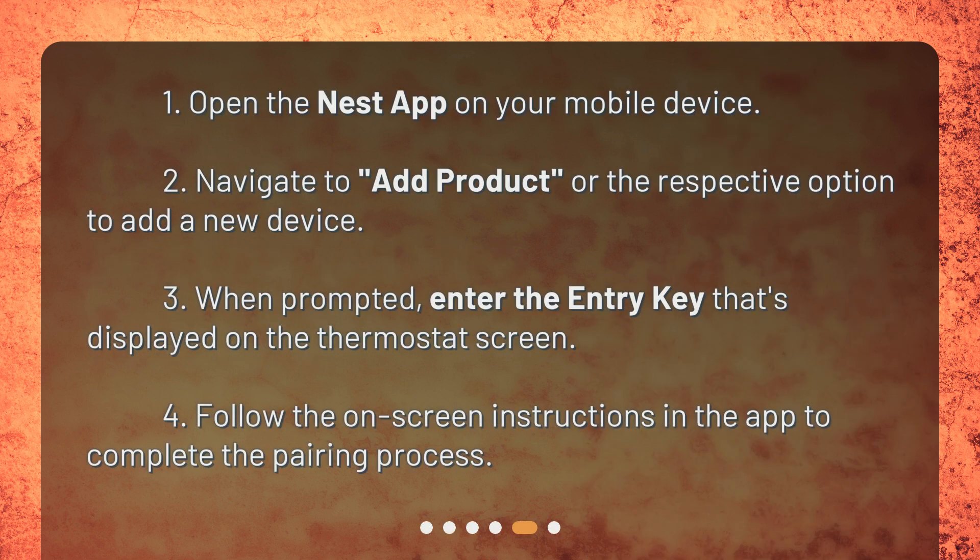1. Open the Nest app on your mobile device. 2. Navigate to Add Product or the respective option to add a new device. 3. When prompted, enter the Entry Key that's displayed on the thermostat screen. 4. Follow the on-screen instructions in the app to complete the pairing process.